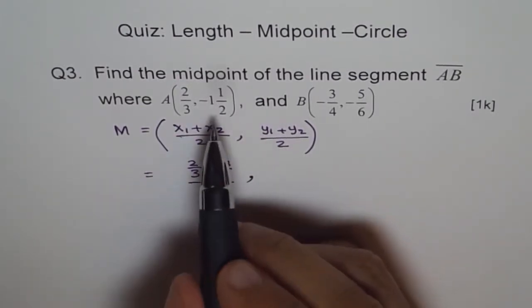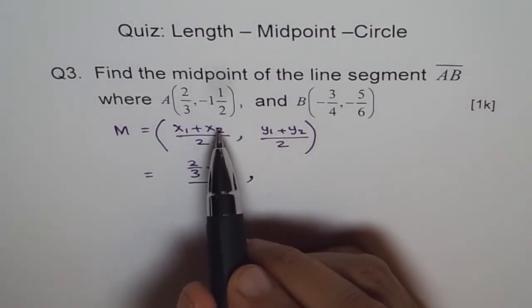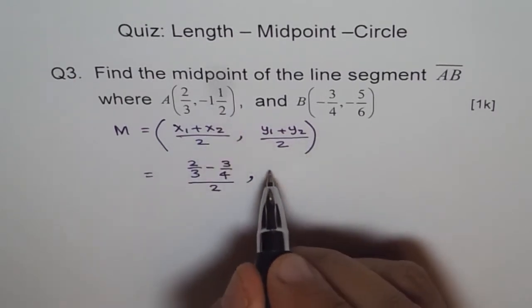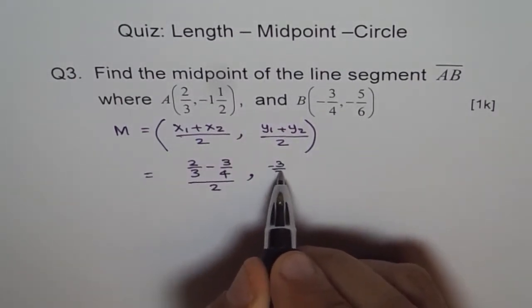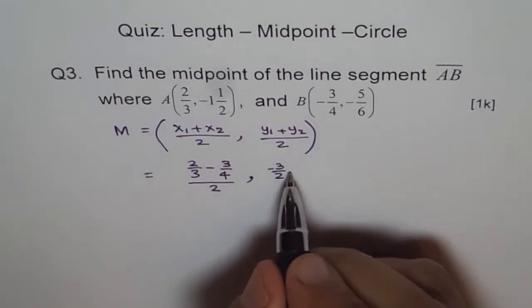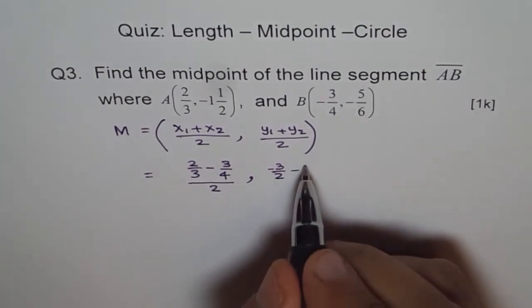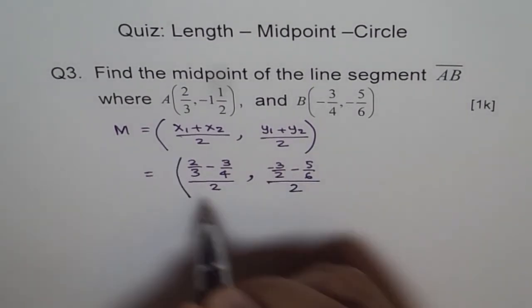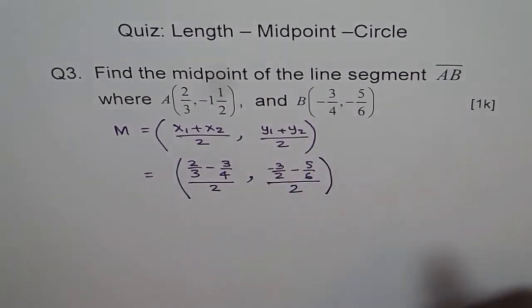And the y points are, we'll convert them into improper fractions first. So it becomes 1 times 2, 2 plus 1 as 3. So it is minus 3/2, plus this point, which is minus 5/6, over 2. So that becomes a midpoint.